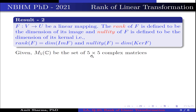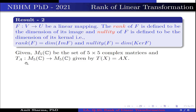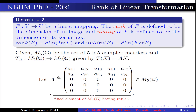Given M5C be the set of 5 cross 5 complex matrices, and T of A is a linear transformation from M5C to M5C given by T of X is equal to AX. Let A be a 5 cross 5 matrix with elements A11, A12, A13, A14, A15, A21, A22, A23, A24, A25, and zeros in the remaining three rows, belonging to M5C. This is a fixed element of M5C having rank 2.